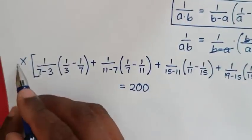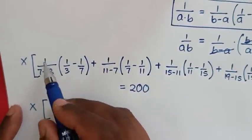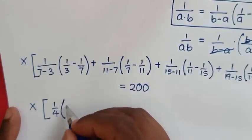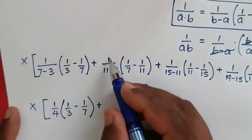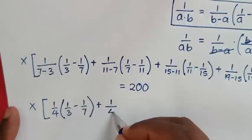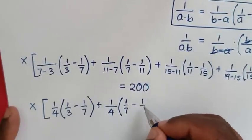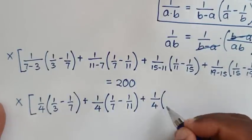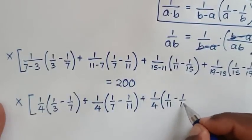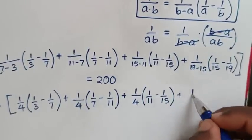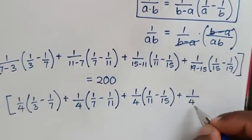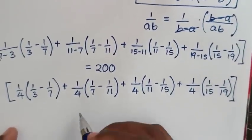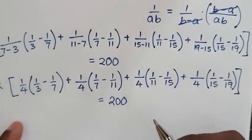In the next step: 7 minus 3 is 4, so the first term gives 1/4 times (1/3 minus 1/7); 11 minus 7 is 4, giving 1/4 times (1/7 minus 1/11); 15 minus 11 is 4, giving 1/4 times (1/11 minus 1/15); 19 minus 15 is 4, giving 1/4 times (1/15 minus 1/19). All equals 200.